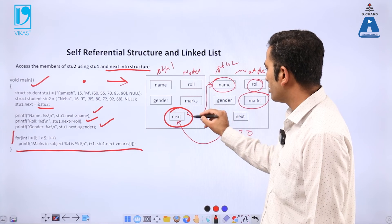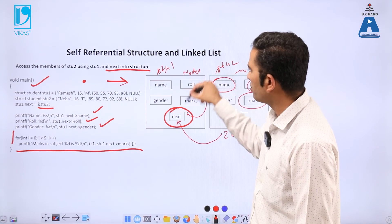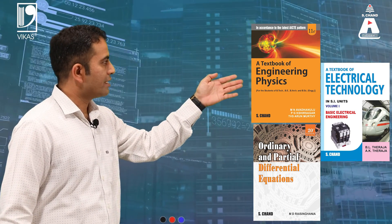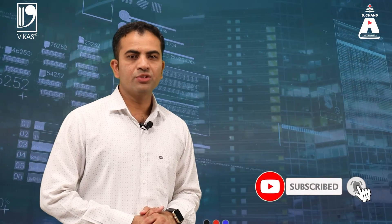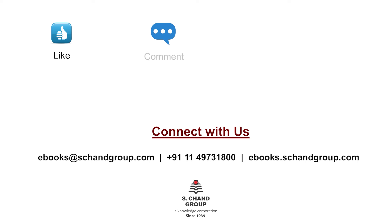If there is no connection between the two nodes, we cannot access the members of student 2 from student 1. This was all about self-referential structures and linked list — how to connect one node to another by assigning the address of the second node to node 1, making the connection between node 1 and node 2. These are some good books from S Chant Publishing. Please subscribe, like, and share. Thank you.